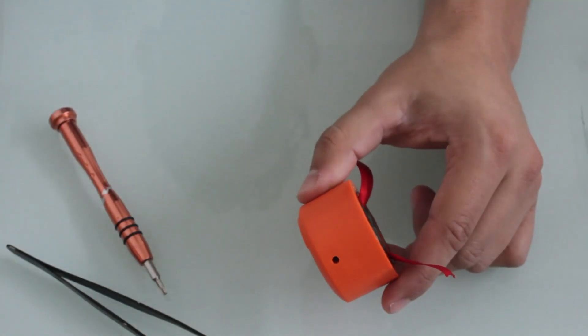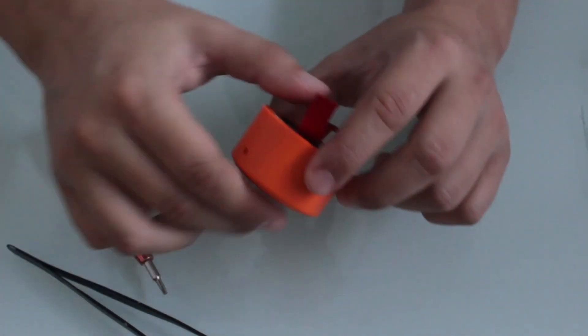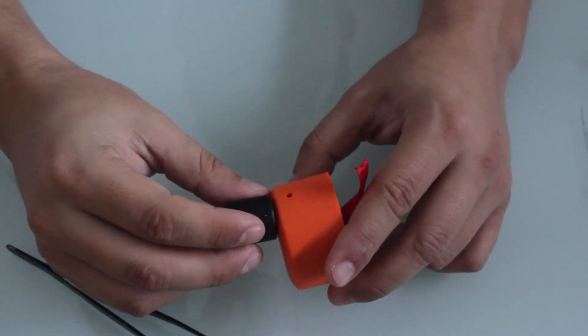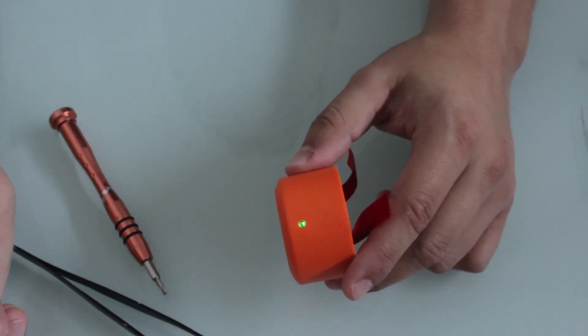Before closing the Phantom, we're going to check if everything is ok. We are going to reset the Phantom with the magnetic key. If the green LED lights up, then everything is good, so we can close the sensor.